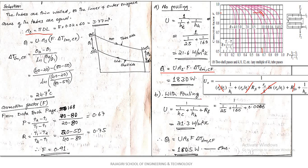With fouling on the outer surface, the equation becomes 1/U = 1/hi + Rfo + 1/ho. Since it is thin-walled (no conduction resistance) and there is no fouling on the inside, using Rfo = 0.006, U = 21.3 W/m²·K. The heat transfer rate with fouling is 1805 W.